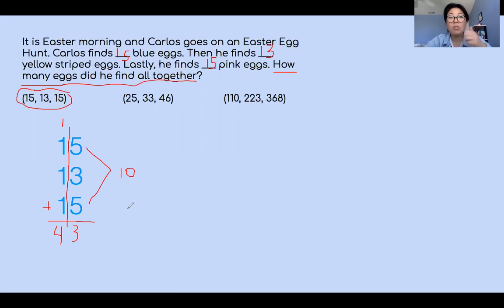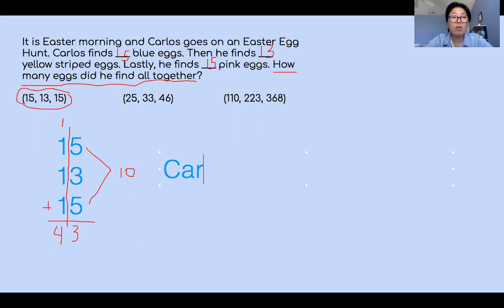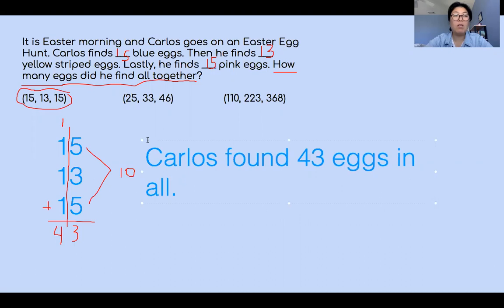So step one is my strategy, then I set up my equation vertically — you can also set it up horizontally depending on your strategy. My last step is to write a complete sentence answering the question. The question is how many eggs did he find all together? Carlos found 43 eggs all together.